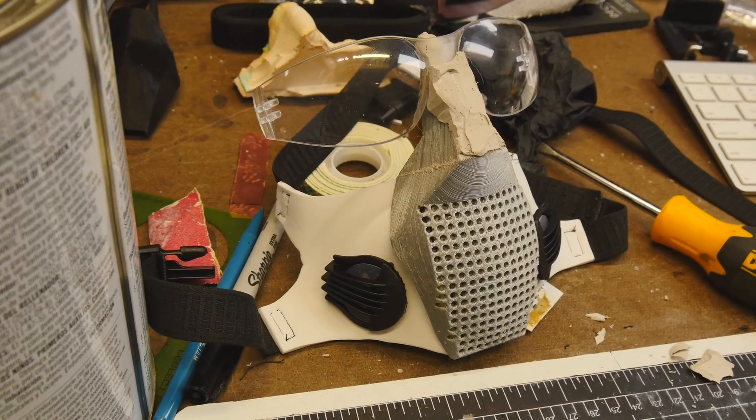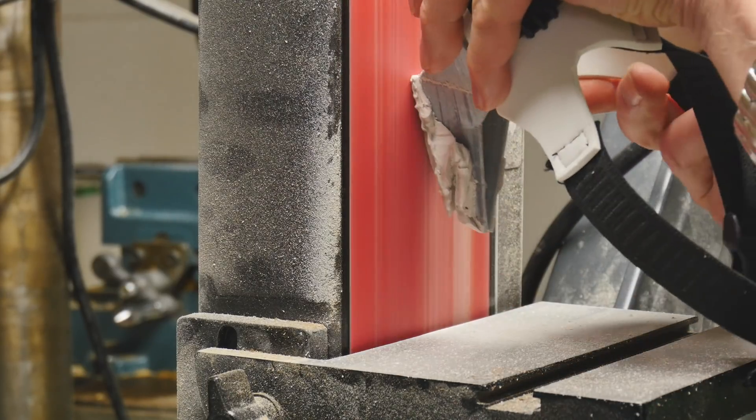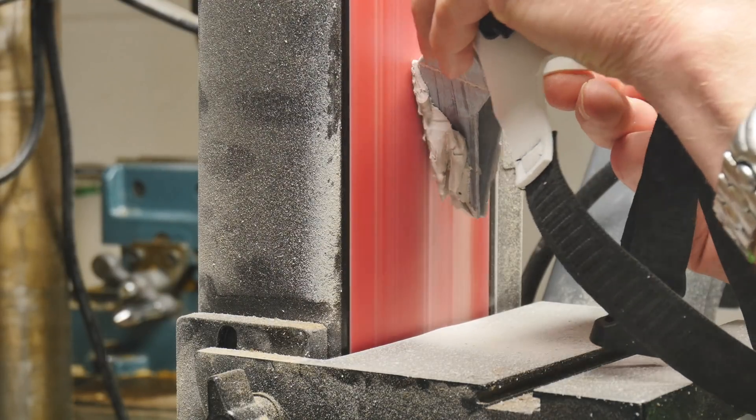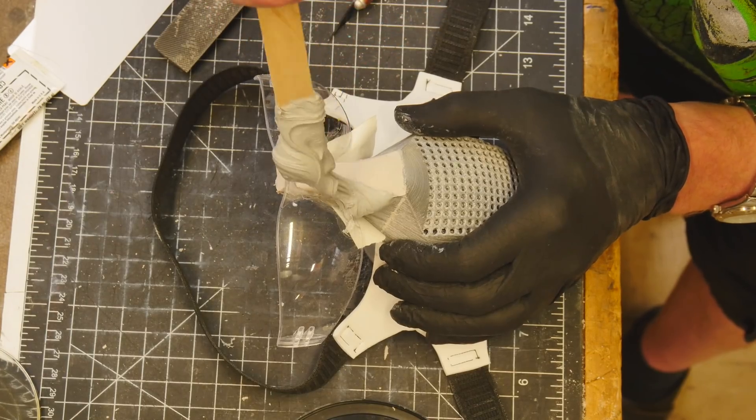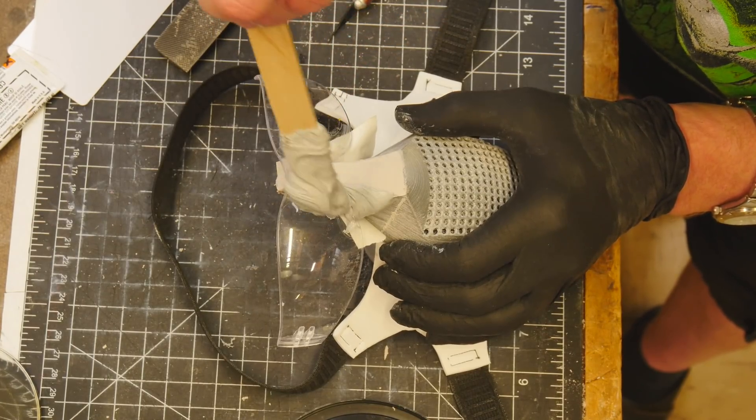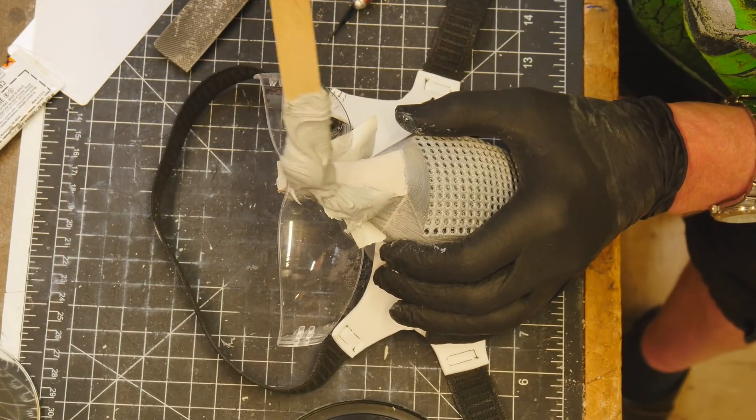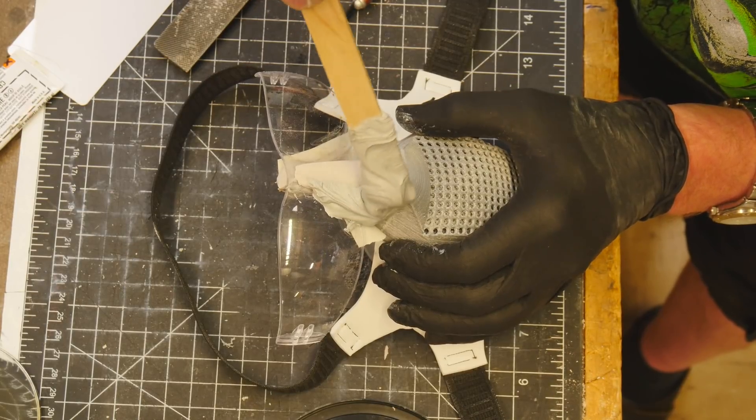We're letting the polyester body filler set up around it so we can move the eyewear in and out and have it be replaceable. This would also be a production feature. I purposely didn't model this area because it's going to be so much easier to do it in Bondo and give me more flexibility in terms of design.